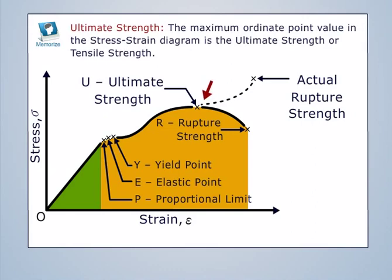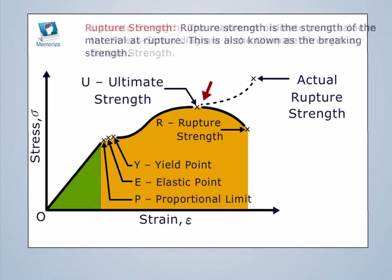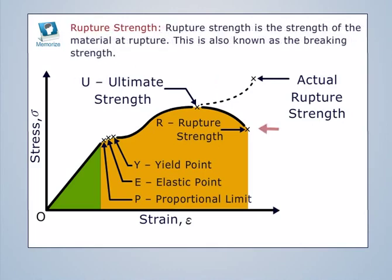The maximum ordinate point value in the stress-strain diagram is the Ultimate Strength, also called Tensile Strength. Rupture Strength is the strength of the material at rupture, and is also known as the Breaking Strength.